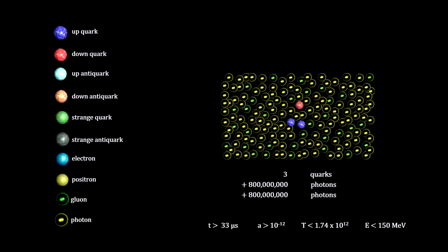In our example, only three quarks would remain. And these three quarks would be surrounded by 1.6 billion photons, the product of the annihilations.